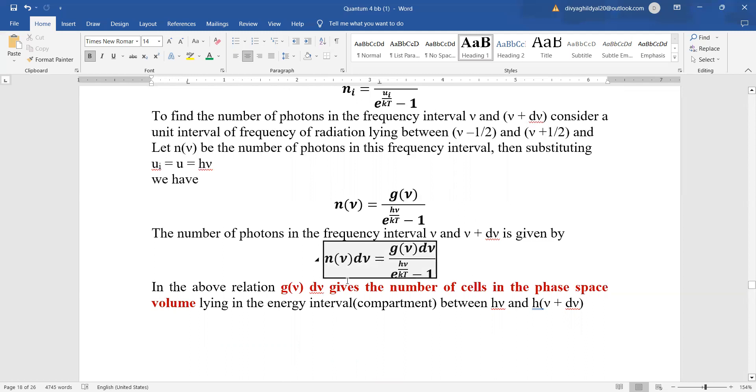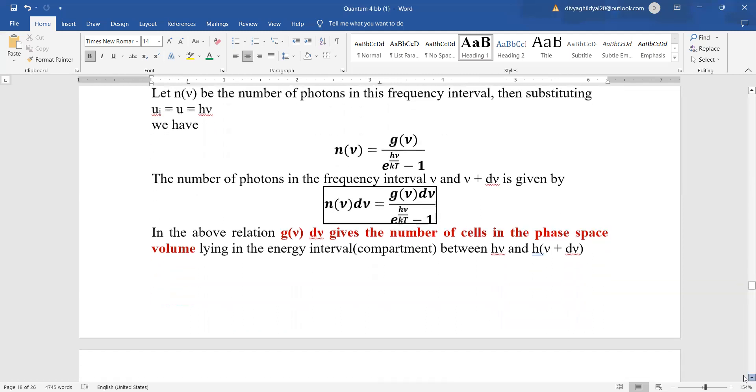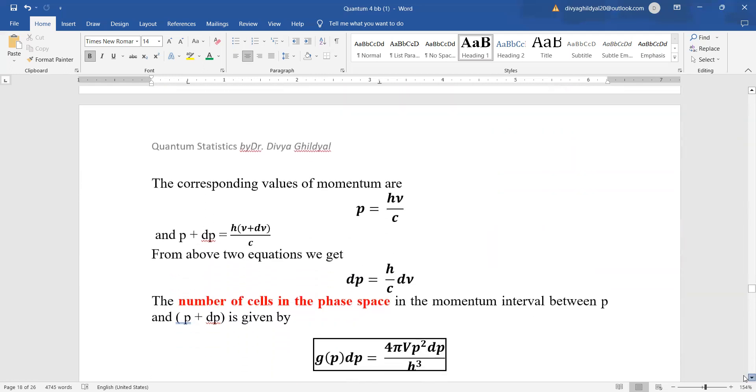This expression gives us the number of cells in the phase space volume lying in the energy interval between h mu and h times (mu plus d mu).